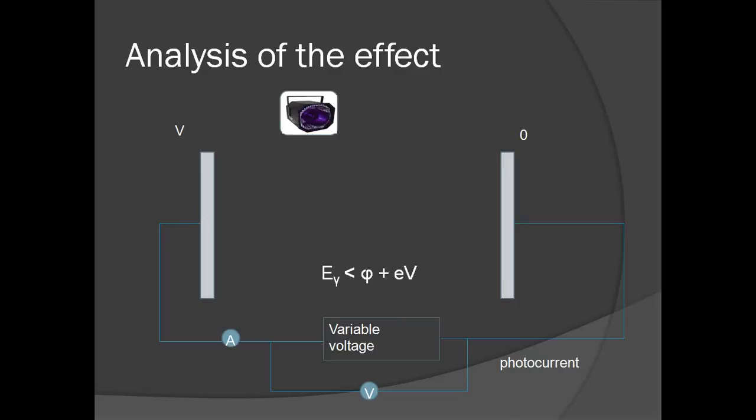On the other hand, if the voltage is increased, so the electrons don't receive enough energy to cross the gap, this inequality holds, and no photocurrent is detected. See how the electrons don't have enough energy to cross the gap.